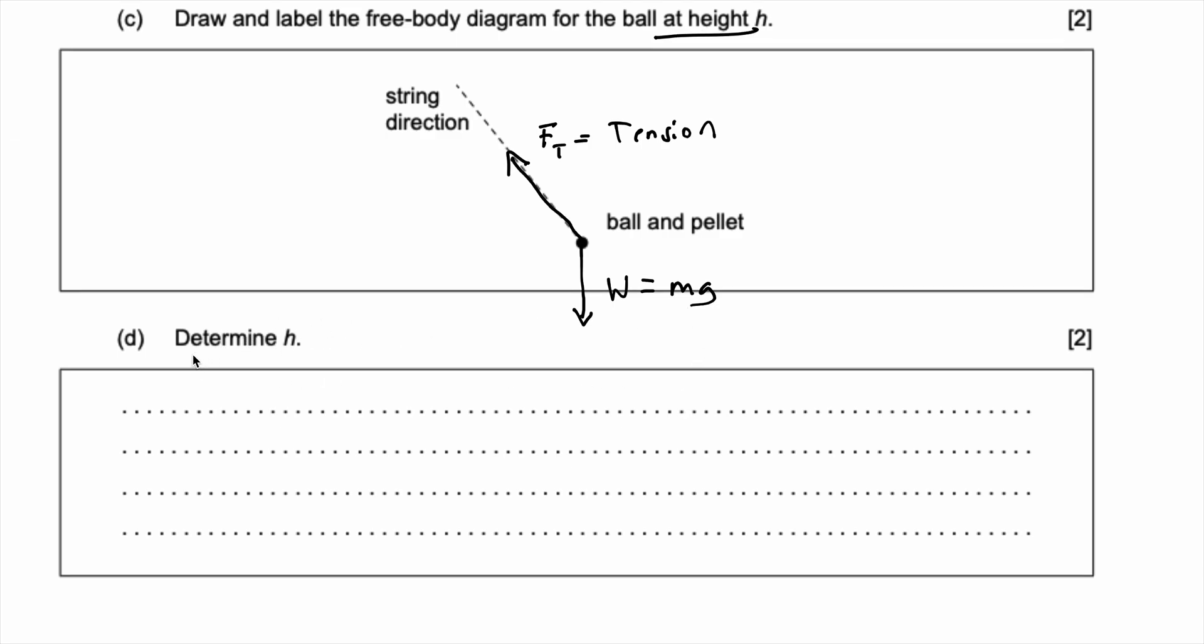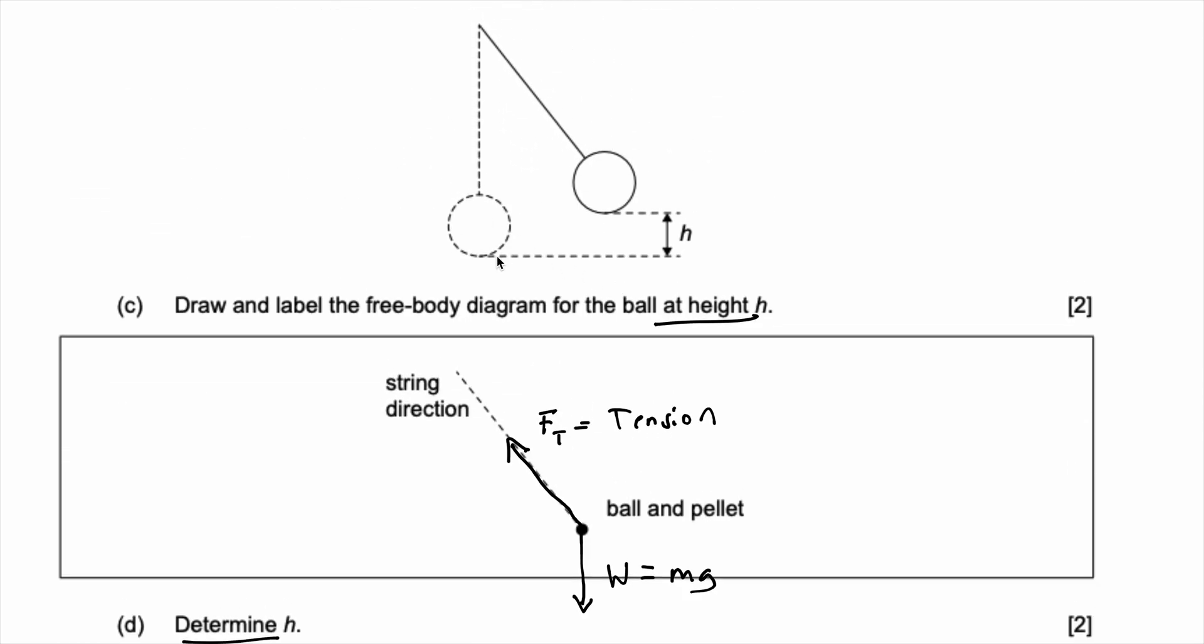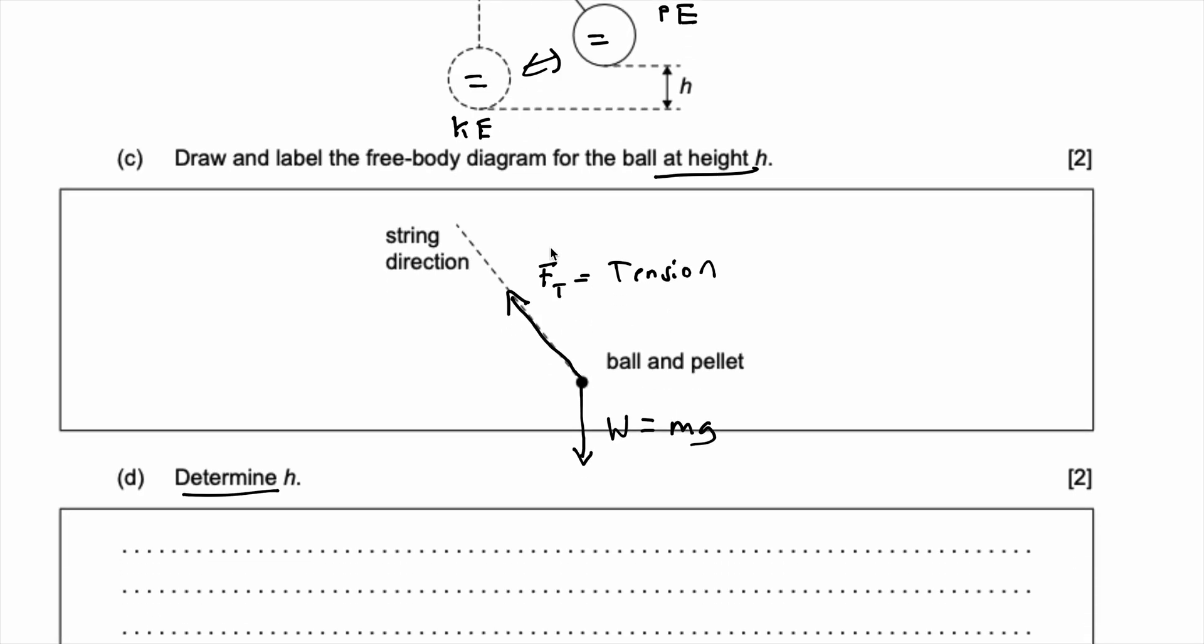Okay now they ask us to determine the height h. To determine the height h we can basically use the conservation of energy, that the initial or the kinetic energy must be equal to the potential energy. And I'll show you how. So we know at this down position there is some kinetic energy KE. And then at this furthest up position there is a potential energy. And we know that this must be equal to this, these both are equal. So we can equate these two energies to solve for h.